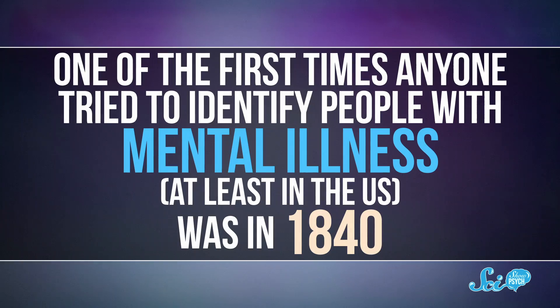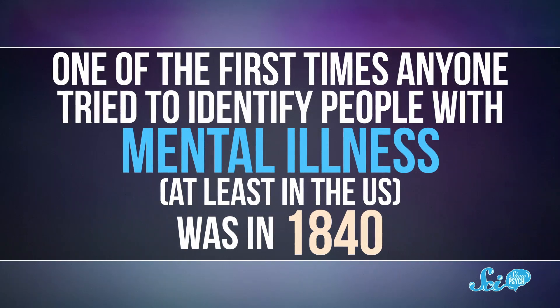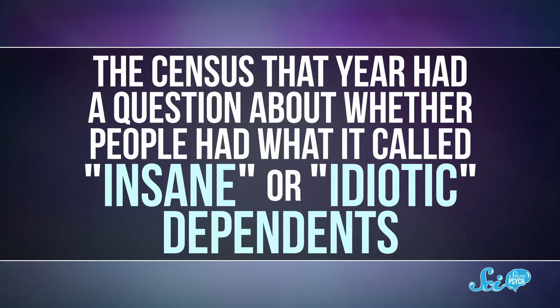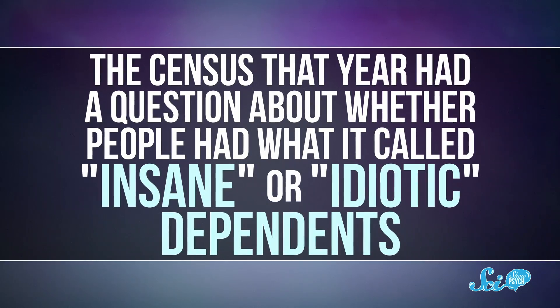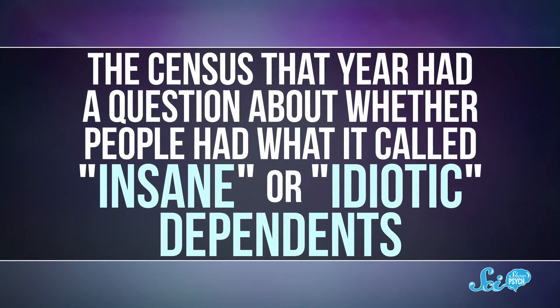One of the first times anyone tried to identify people with mental illness, at least in the US, was in 1840. The census that year had a question about whether people had what it called insane or idiotic dependence — language has changed a bit since then. The problem was the question didn't include any definitions of mental illness, so census takers kind of had to wing it. And without specific sets of symptoms to use when diagnosing people, doctors also had to wing it.